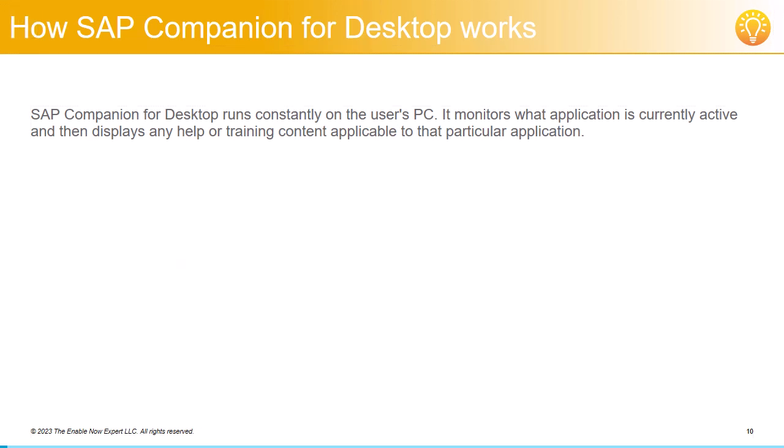SAP Companion for Desktop runs constantly on the user's PC. It monitors what application is currently active and then displays any help or training content applicable to that particular application. Let's look at how this works in practice.